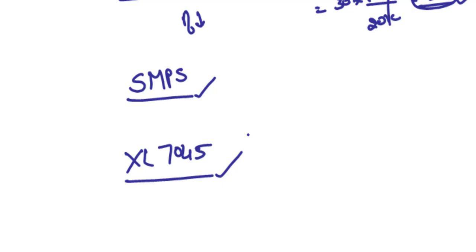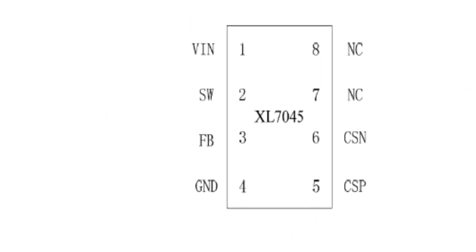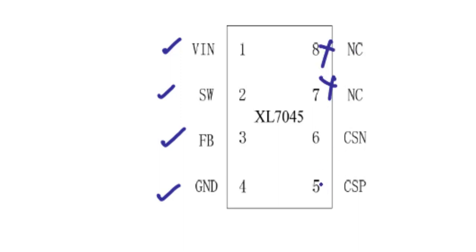The XL7045 is an 8-pin IC. Its pins are: Vin (input voltage), Switch, Feedback, Ground, two NC (not connected) pins, and Current Sense Positive (CSP) and Current Sense Negative (CSN).